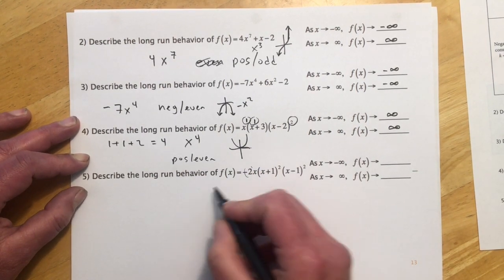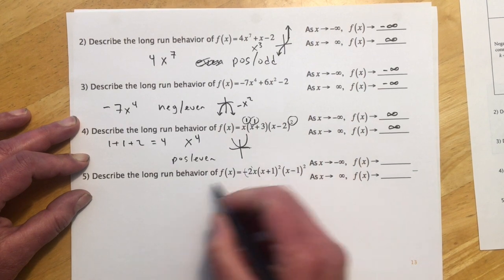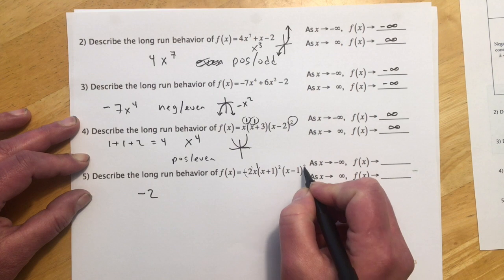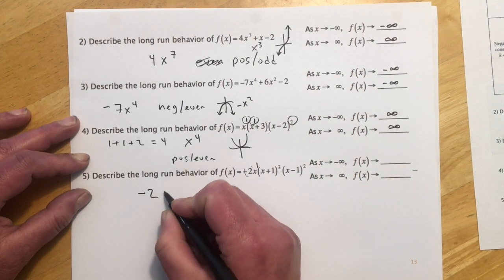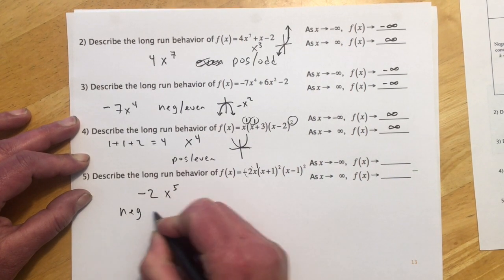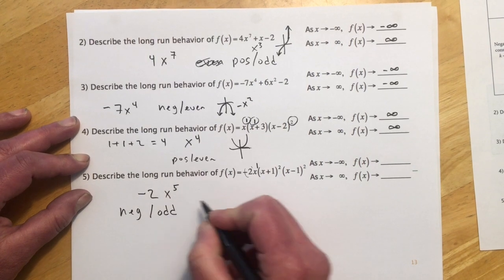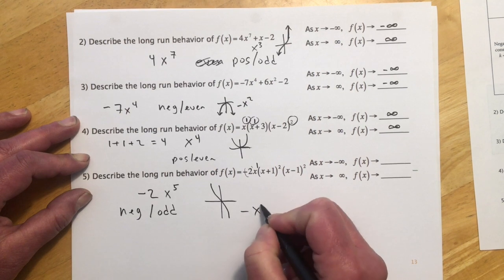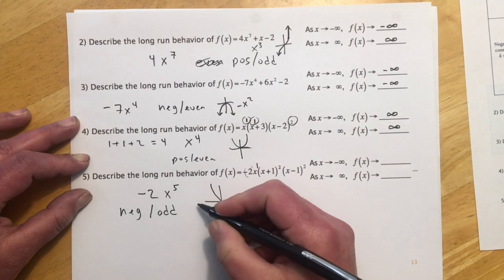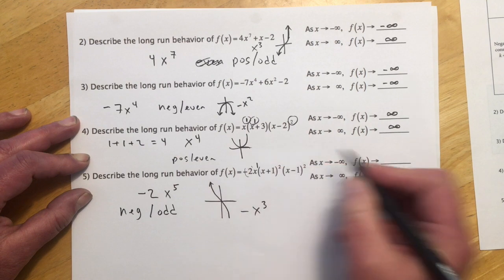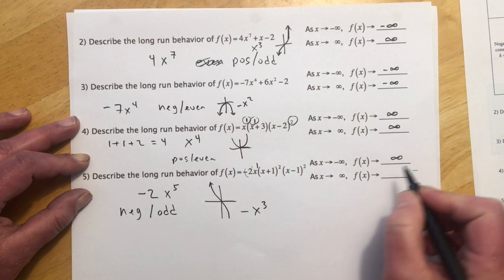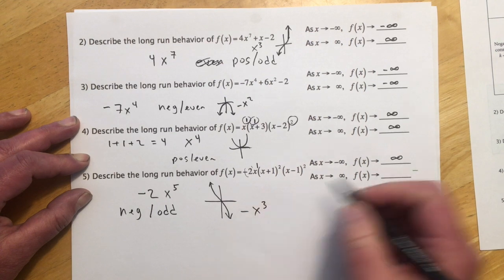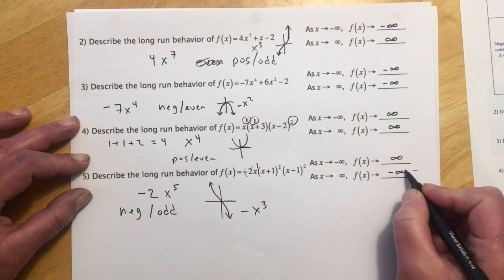And then this last one we have this negative 2, and that's going to be our only coefficient, and we have 1, 2, 3, 4, 5 x's. So x to the fifth. So this is negative and odd, and all negative odd things are going to look like negative x cubed. And so as x goes to negative infinity, the y values get bigger, so it goes to positive infinity. And then as x goes to positive infinity, the y values get smaller, they're getting more and more negative, so that's negative infinity.